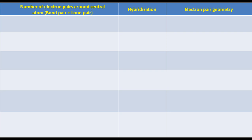Before filling this table, we should first know that an s orbital can have maximum one electron pair, a p orbital can have maximum three electron pairs, and a d orbital can have maximum five electron pairs.